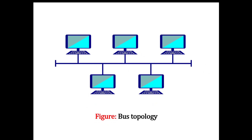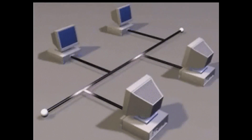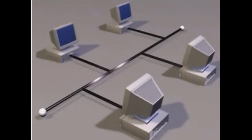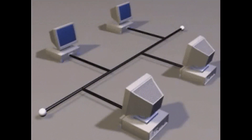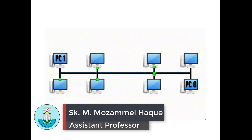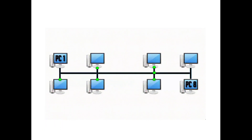A very simple figure of bus topology can be drawn like this. Notice the figure and observe how signals are passed from one computer to the other through the cables. You can also see this example: suppose PC1 wants to send a signal to PC8 — in this way, PC1 can send data to PC8.